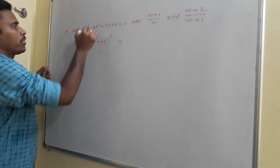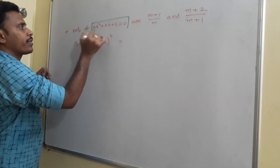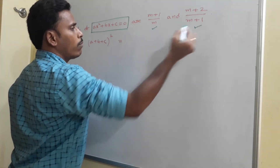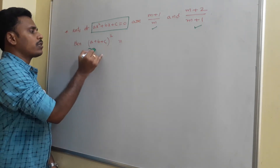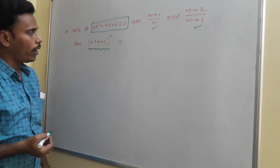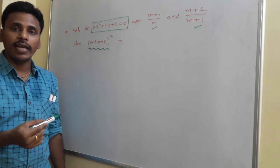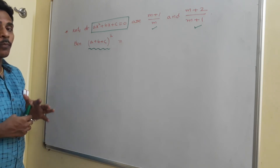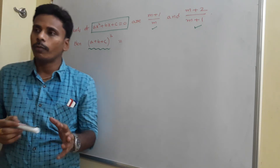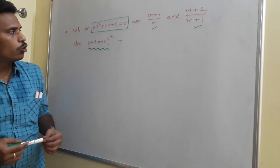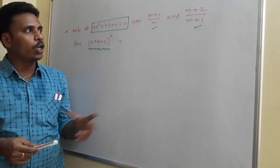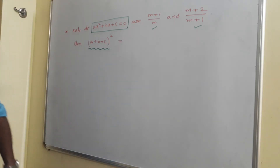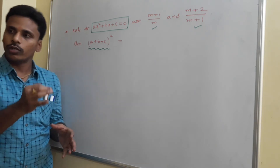Now look at the next problem. The general quadratic equation ax² plus bx plus c equals 0 has roots (m+1)/m and (m+2)/(m+1). Our task is to find the value of (a+b+c)², which should be expressed in terms of a, b, c. The usual approach of sum and product of roots would be lengthy, so we need a different, more logical approach.